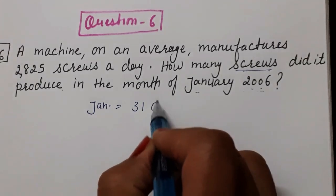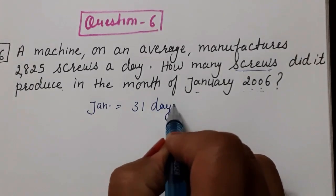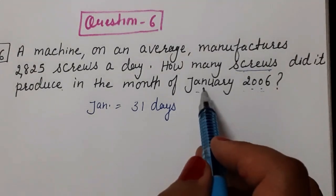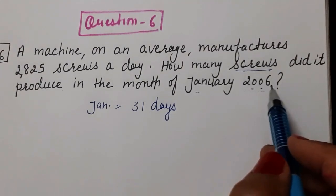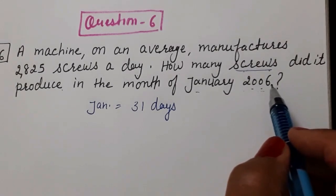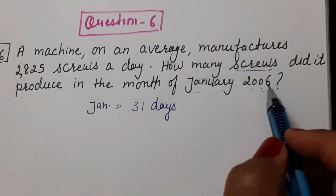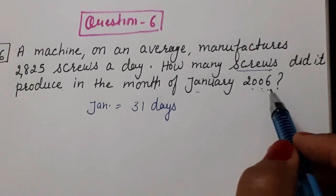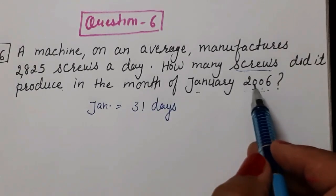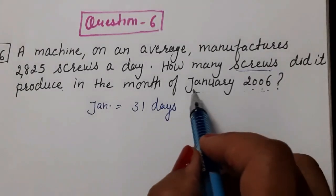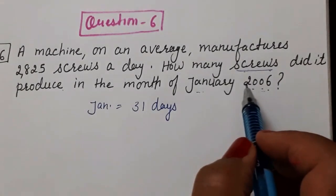Here January has 31 days, so we take 31 days. You should not cram that January equals 31 days blindly. For example, if February were given, we would check whether 2006 is a leap year — if yes, February has 29 days; if it's a simple year, it has 28 days. So always read the question carefully for whichever month is given.